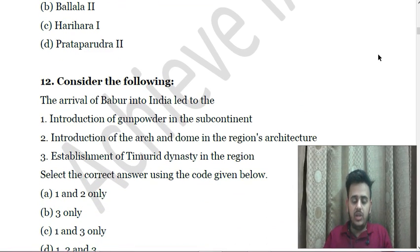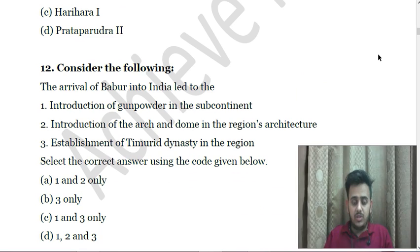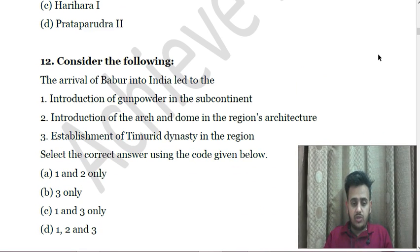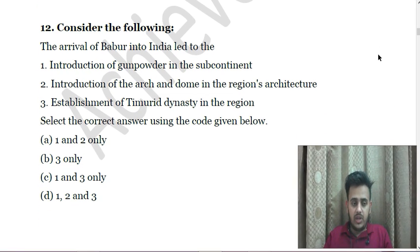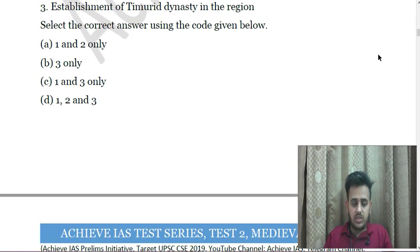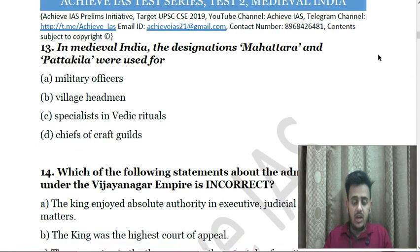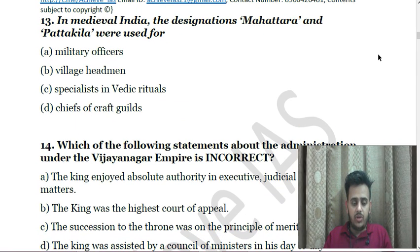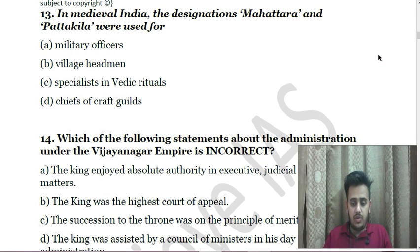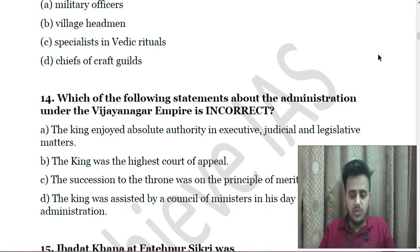Next: Consider the following — First, the arrival of Babur into India led to the first introduction of gunpowder in the subcontinent. Second, introduction of arch and dome in regional architecture. Third, establishment of Timurid dynasty in the region. Choose the correct answer. Next: In medieval India, the designations Mahathra and Patakila were used for — A. Military officers, B. Village headmen, C. Specialists in Vedic rituals, D. Chiefs of craft guilds.